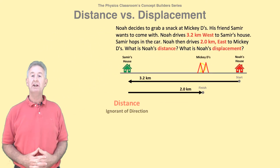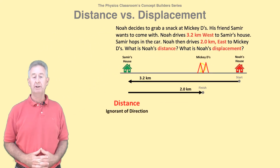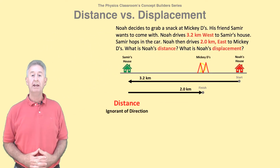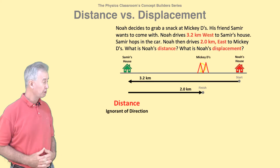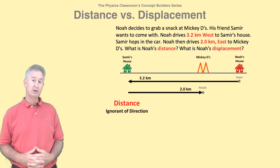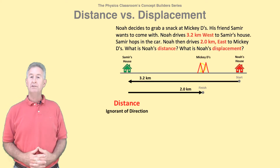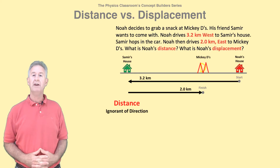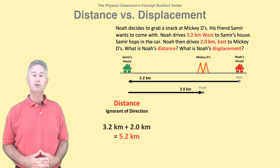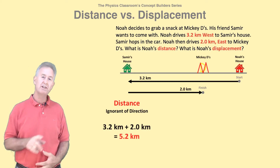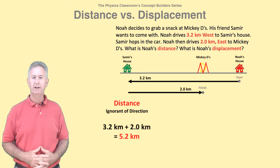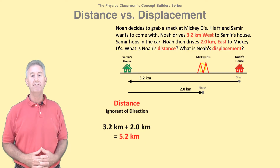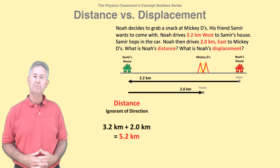Distance is ignorant of direction. To determine the distance here, ignore all the directional information. Distance refers to the amount of ground that Noah drove over. Simply add the lengths of the two parts of this back-and-forth motion. Noah traveled a distance of 5.2 kilometers.